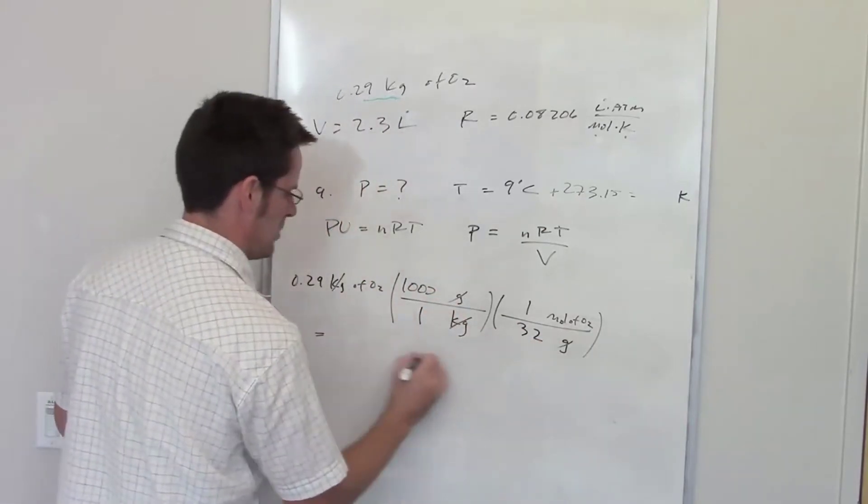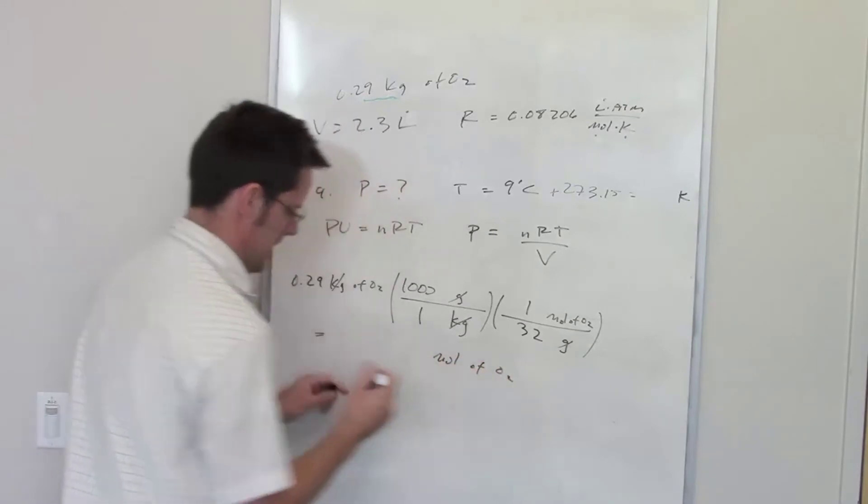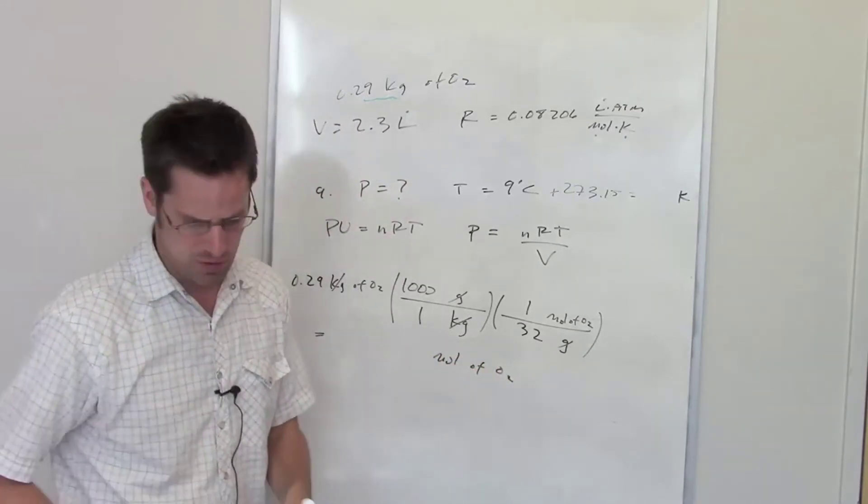How many grams are there in a kilogram? One kilogram contains a thousand grams. My kilograms cancel, my grams cancel, and I end up with moles of O2. The number of moles of O2 I calculated out for this problem is 9.06.